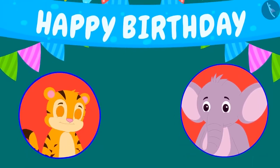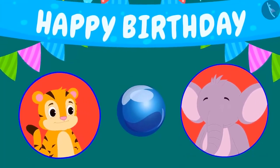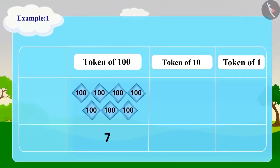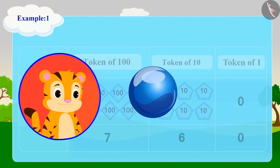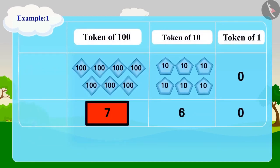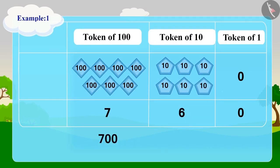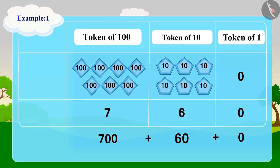Appu is counting the marbles given by Sher Khan using tokens — he used 7 tokens of 100, 6 tokens of 10 and 0 tokens of 1. Can you write the number of marbles? 7 tokens of 100 means 700, then 6 tokens of 10 means 60, and there are no tokens for 1 so we write 0. We can easily identify this as 760. Sher Khan gifted Appu 760 marbles.